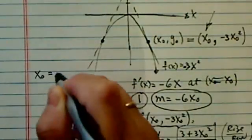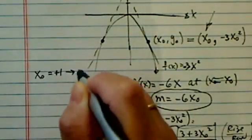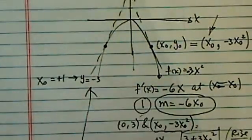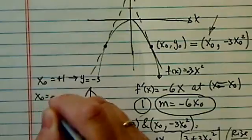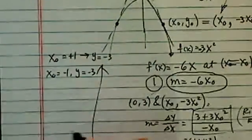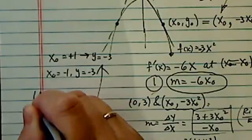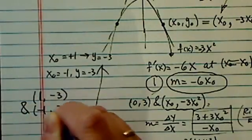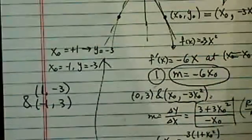So, the x is equal to plus 1. That gives y is equal to minus 3. x0 equal to minus 1, y is 0 minus 3. So, the two points that we have is 1 minus 3 and minus 1, 3.